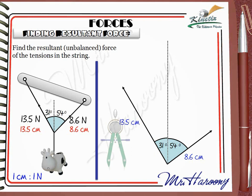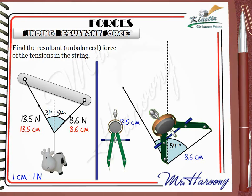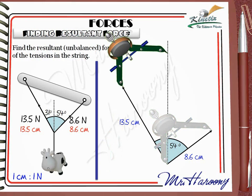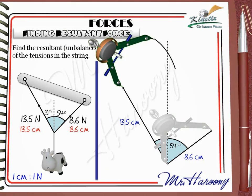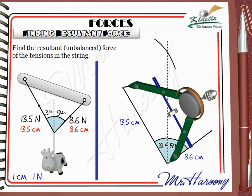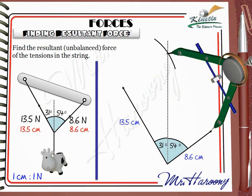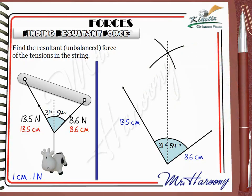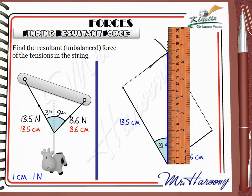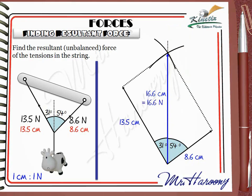Now close the parallelogram using the compass. Open the compass to fit the first force of 8.6 cm, move it to the other end of the other force, and make a small arc. Then open the compass to exactly fit the 13.5 cm force and draw another arc. The intersection of the two arcs closes the parallelogram. Complete the parallelogram and draw the diagonal — this represents the resultant force. The ruler shows it is 16.6 cm long, which means the resultant force is 16.6 N.